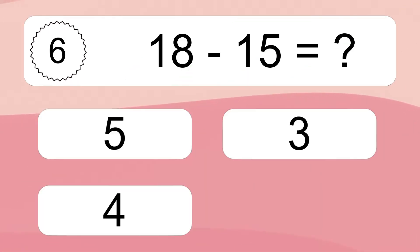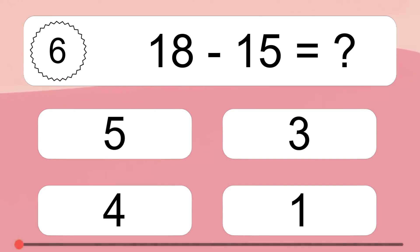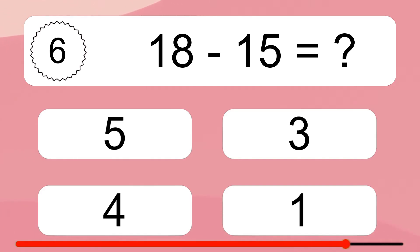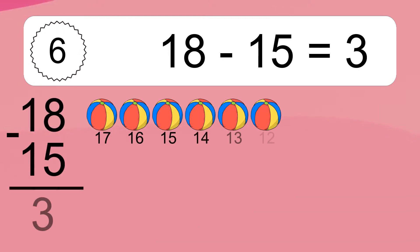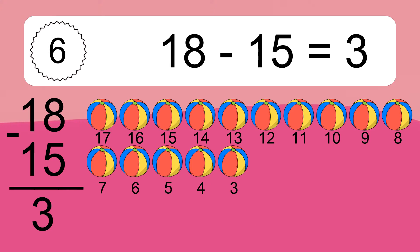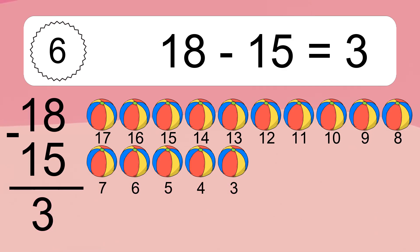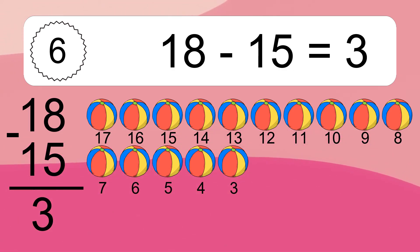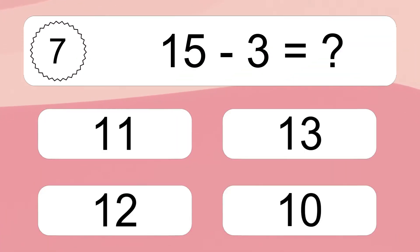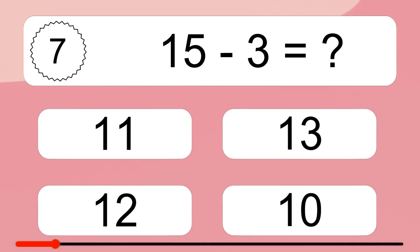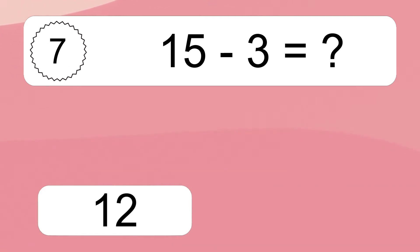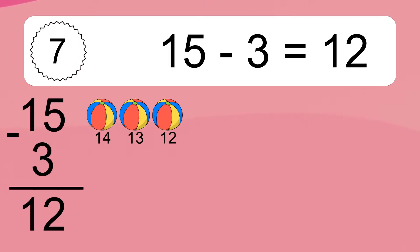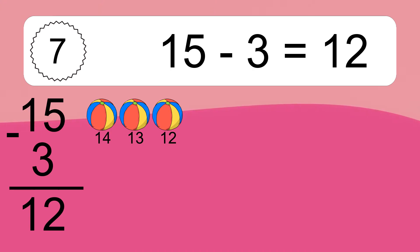18 minus 15 equals what? Let's count it: 17, 16, 15, 14, 13, 12, 11, 10, 9, 8, 7, 6, 5, 4, 3. 15 minus 3 equals what? 15 minus 3 equals 12. Let's count it: 14, 13, 12.